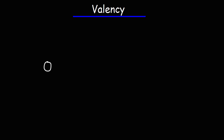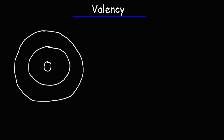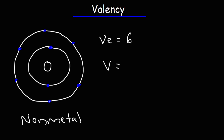Go ahead and try this one: determine the number of valence electrons for the element oxygen and also its valency. Oxygen has a total of eight electrons — two in the first energy level and six in the second energy level. So because it has six electrons in its highest energy level, it has six valence electrons. Oxygen wants to have eight electrons in its outermost energy level, so in order to get to eight, it wants to acquire two electrons. Like fluorine, oxygen is a non-metal. The non-metals are on the right of the periodic table, while metals are on the left. So because oxygen wants to acquire two electrons, it's going to have a valency of two.